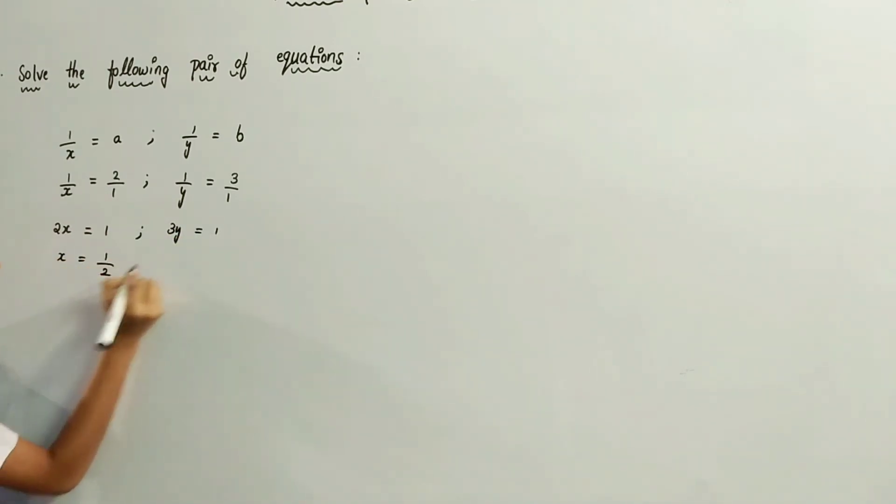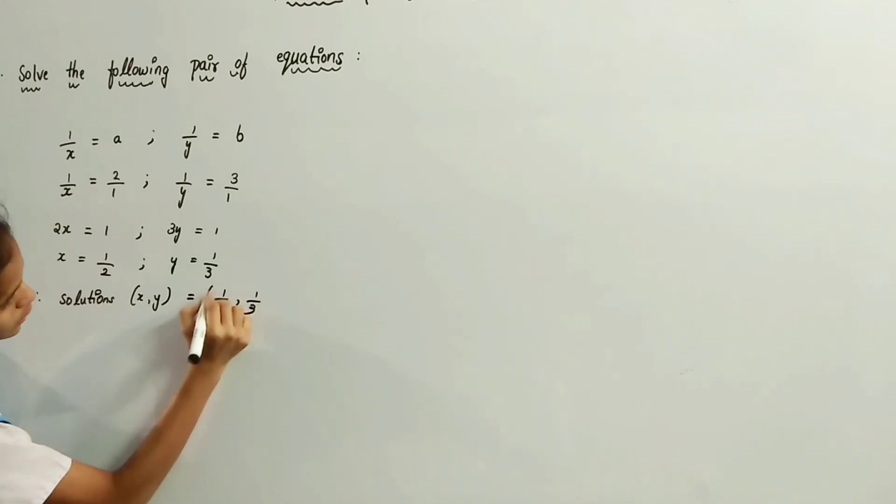x equals 1 by 2, and y equals 1 by 3. Therefore, the solution is x equals 1 by 2, y equals 1 by 3.